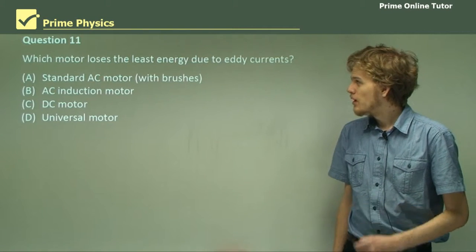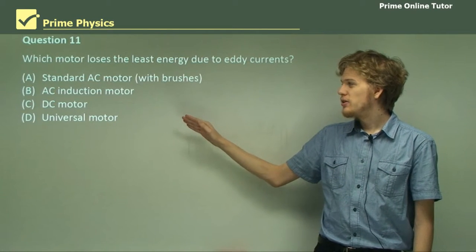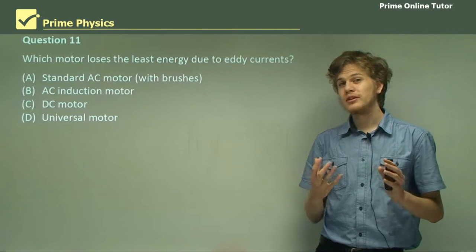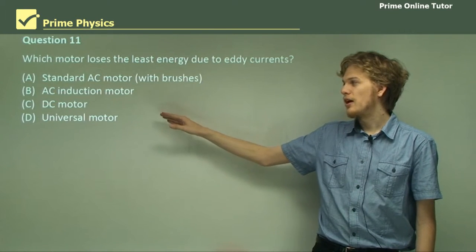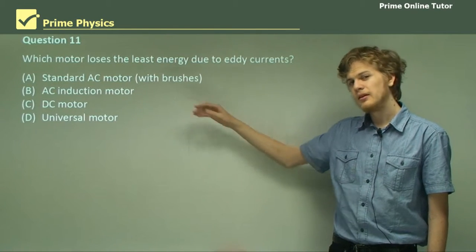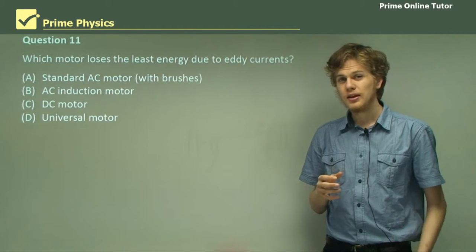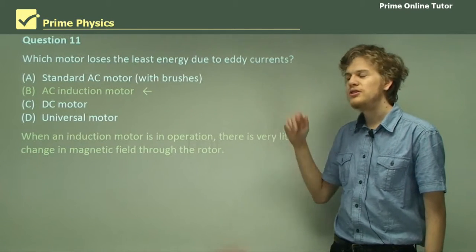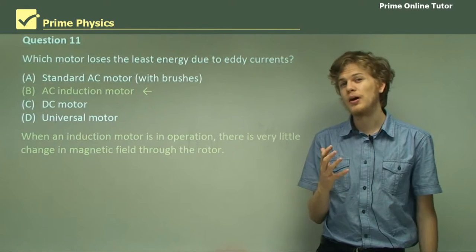Question 11. Which motor loses the least energy due to eddy currents? Is it the standard AC motor, the AC induction motor, the DC motor, or the universal motor? Remember that eddy currents are produced by moving a conductor quite quickly close to a magnetic field. Now in AC induction motors, DC motors, and universal motors, this is going to be a problem. But in induction motors, the squirrel cage rotor is going to be turning at the same rate as the rotating magnetic field. And this means we won't get eddy currents. So the AC induction motor loses the least energy due to eddy currents. Although remember, it does lose a lot of energy when it's producing the three-phase power source in order to power the motor in the first place.